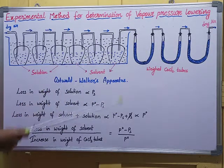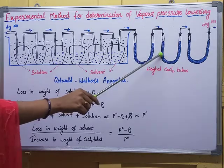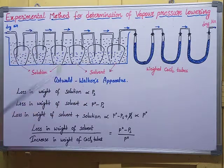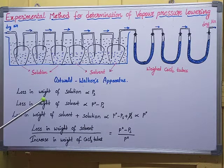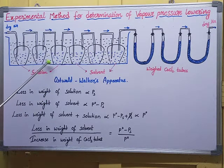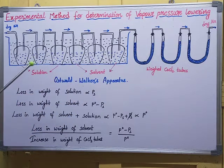Therefore, the relative lowering of vapor pressure is directly proportional to the loss in weight of the solvent divided by the increase in weight of the calcium chloride tubes. The formula is: loss in weight of solvent / increase in weight of calcium chloride tubes = relative lowering of vapor pressure. To calculate the relative lowering of vapor pressure experimentally, we measure the loss in weight of the solvent bulbs and the gain in weight of the CaCl₂ tubes. This completes the Ostwald's Walker's experiment.